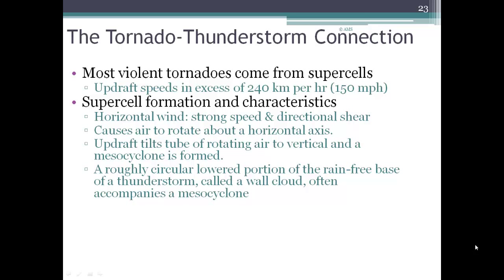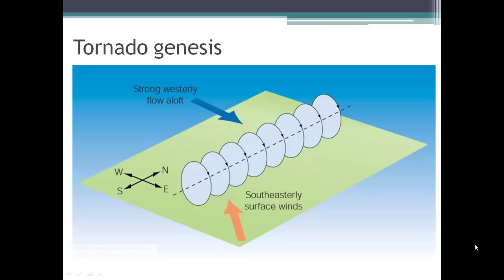What happens is this causes air to rotate around a horizontal axis. We get these strong updrafts that bump into this horizontal rotating axis of air — or tube of air — and it can push that rotating air vertical. And once that happens, we get what's called a mesocyclone formed within this big supercell.